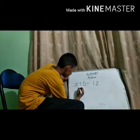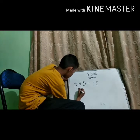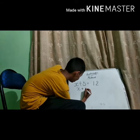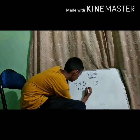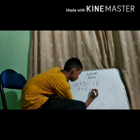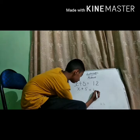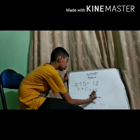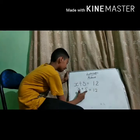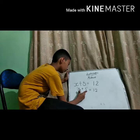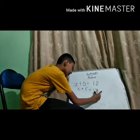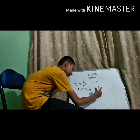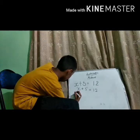What is our equation? x plus y equal to 12. We need to separate these two equations — x plus y on one side, and 12 on the other side. Let's separate them.